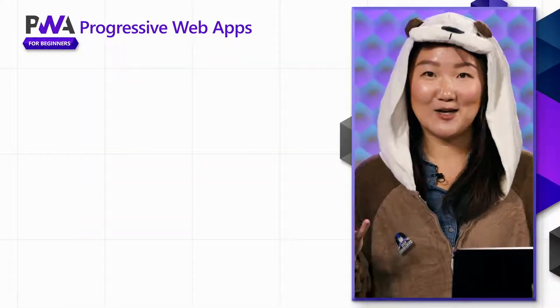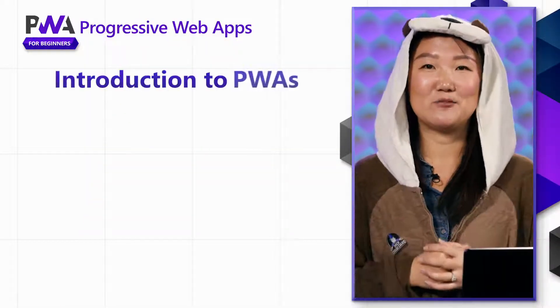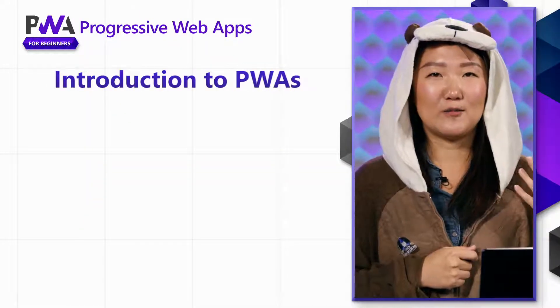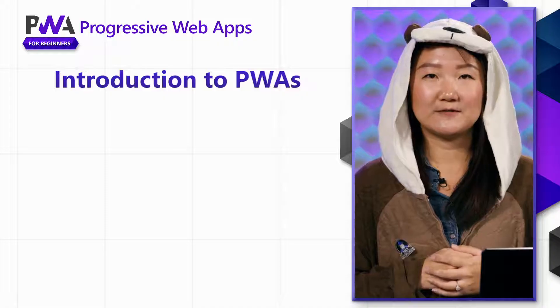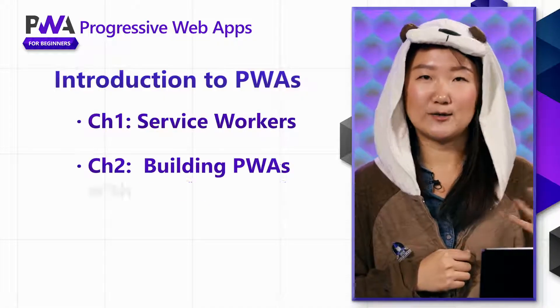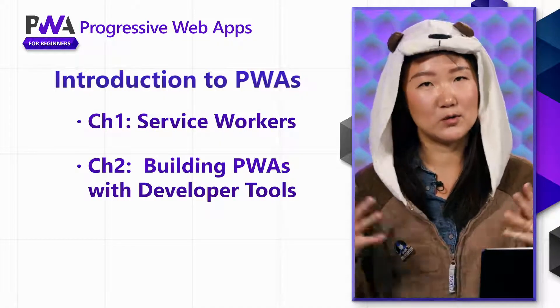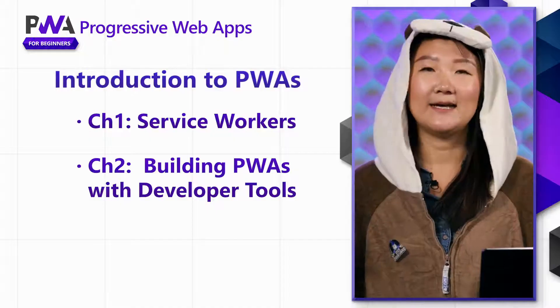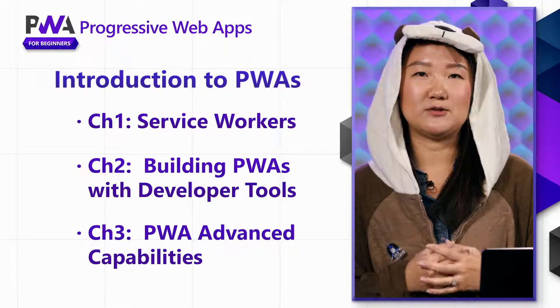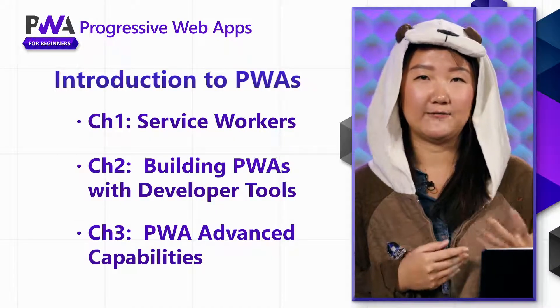There are going to be four chapters total for the series. Today, we're starting with chapter one, which will introduce you to progressive web apps. And later on, we'll have three more chapters, starting with a little bit on service workers, then how to get started building progressive web apps using all the cool tooling, and then in the last chapter, we'll introduce you to advanced capabilities.